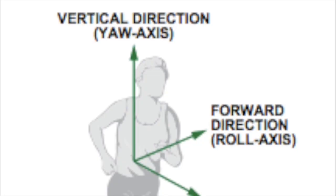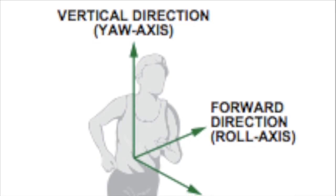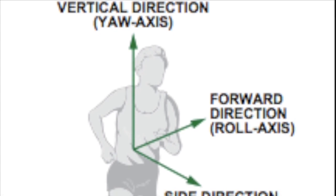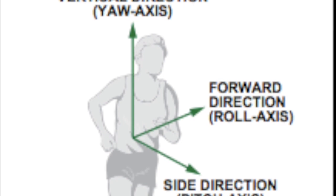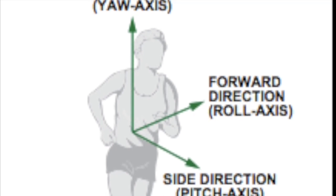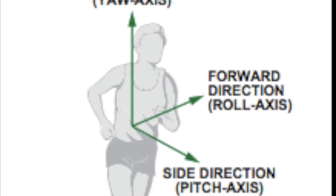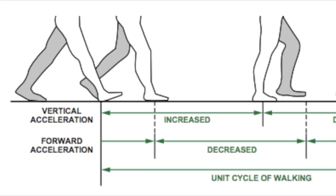Pedometers are programmed to calculate a user's steps based on the acceleration fluctuations throughout the walking cycle. The three components of motion for an individual and the related axes are forward roll, vertical yaw, and side pitch, and the acceleration is measured along each axis.